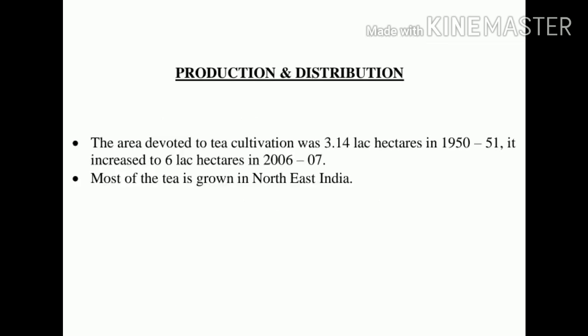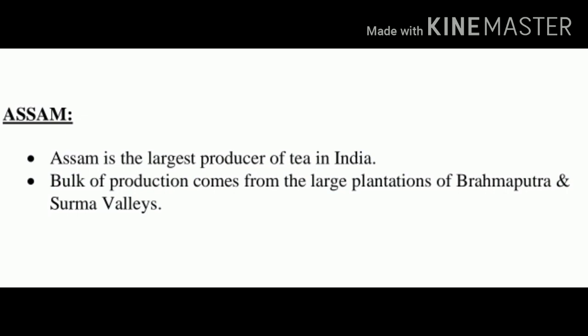When we talk about its production and distribution, India is the world's largest producer of tea, contributing about 35% of total tea production of the world. The area devoted to tea cultivation was 3.14 lakh hectares in 1950-51 and increased to 6 lakh hectares in 2006-07. Most of the tea is grown in Northeast India. Assam is the largest producer of tea in India. The bulk of production comes from the large plantations of Brahmaputra and Surma Valleys. Small holdings have also started growing tea, which has largely contributed to the increase in production in this region.